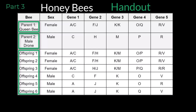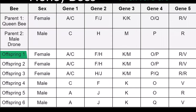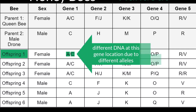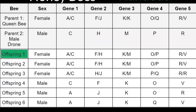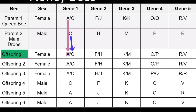Let's use different colors to determine how each offspring inherited its alleles. Let's look at offspring number 1, which is a female. For gene number 1, this female inherited an A allele on one copy of chromosome 1 and C on the other copy of chromosome number 1. This means that the DNA sequence at the location is different between these chromosomes. Now let's see if we can figure out how offspring number 1 inherited these chromosomes. For gene number 1, this female offspring has the alleles A and C. Looking at the alleles of the parents, only parent 1, the queen bee, has the A allele. This means that offspring number 1 must have inherited the A allele from her mother. I'm going to color code the A allele pink to indicate that it was inherited from the mother. Since the A allele was inherited from the mother, the C allele must have been inherited from parent 2, the male drone. I'm going to color code the C allele blue to indicate that it was inherited from the bee's father.